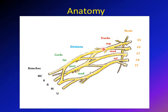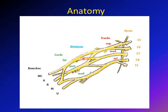C5 and C6 unite to form the upper trunk, C7 continues as the middle trunk, and C8 and T1 form the lower trunk. So five roots give rise to three trunks. Each trunk gives two divisions: anterior and posterior. The three posterior divisions form the posterior cord. The anterior division of the upper and middle trunks forms the lateral cord, and the anterior division of the lower trunk forms the medial cord.